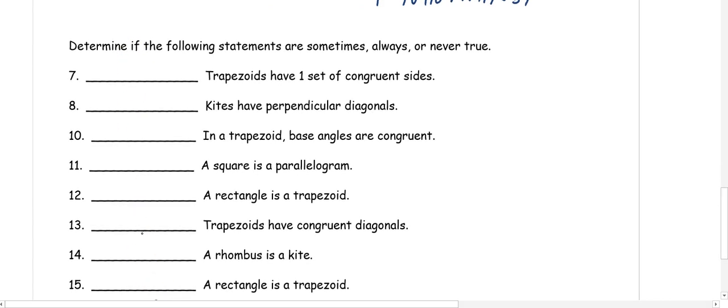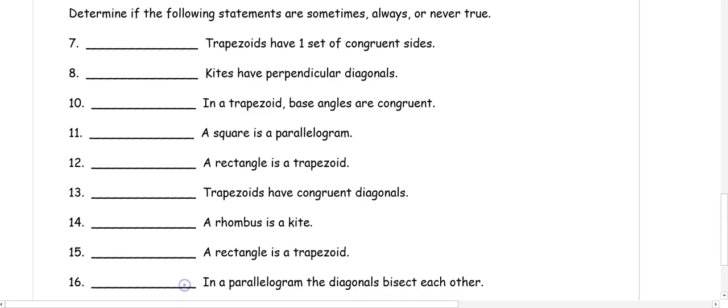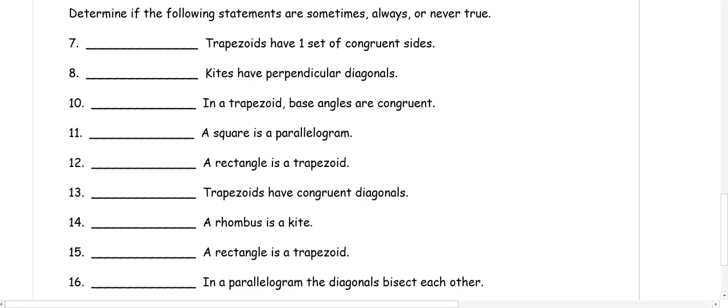Determine whether the following statements are sometimes, always, or never true. Sometimes means it could happen in some shapes but not others; always means it's a property of the shape; never means it's not a property or two shapes have no relationship. Number 7: trapezoids have one set of congruent sides. They only have congruent sides if it's an isosceles trapezoid with congruent legs, so this is sometimes true.